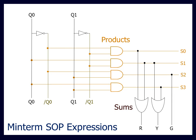That is, each product term is the product of all of the inputs, in this case Q0 and Q1, in either original form or in inverted form.